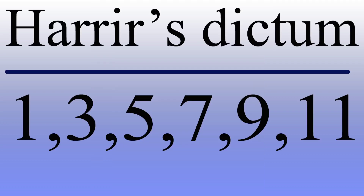This measurement of the spleen is known as Harrier's dictum of odd numbers of the spleen: 1, 3, 5, 7, 9, and 11, where 9 and 11 are related to the 9th and 11th ribs.